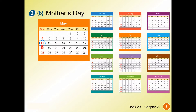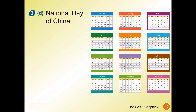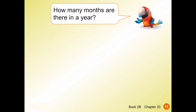Mother's Day the answer would be May 11th, but it will not be the same every year. Mother's Day is actually the second Sunday of May, so the date may not be the 11th this year or next year. Father's Day is the third Sunday of June — the date won't be the same every year either. National Day of China is always October the first.